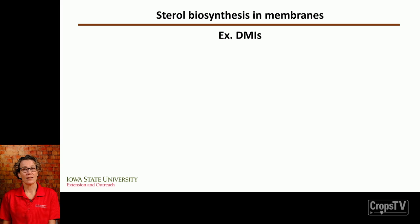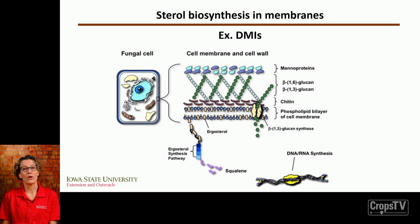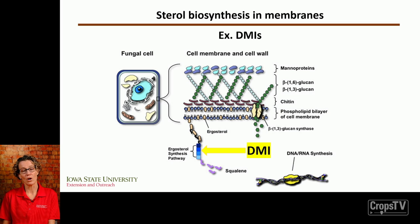The DMIs affect sterol biosynthesis in membranes. In the fungal cell membrane — that phospholipid bilayer — there are ergosterols. What the triazoles do is prevent the formation of those sterols. If we don't have those sterols, the fungal cell membrane can't form. If the fungal cell membrane can't form, then the cell wall can't form, and that means the fungus is not able to grow.